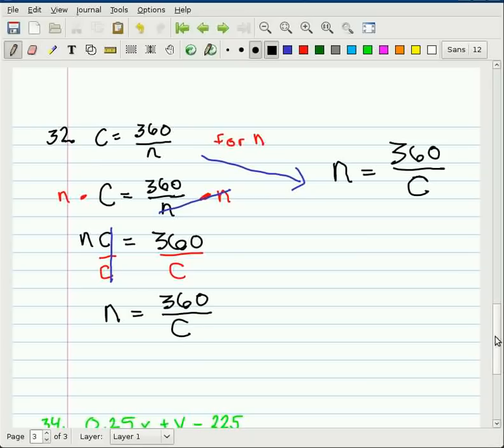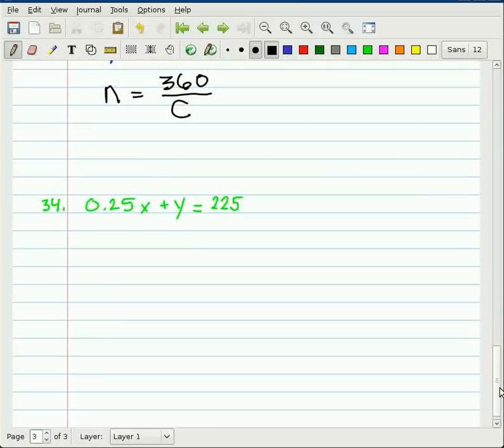Last but not least, a green problem, which is kind of funny. It's 0.25x plus y, and we're solving for x. So you can see x is located right here.